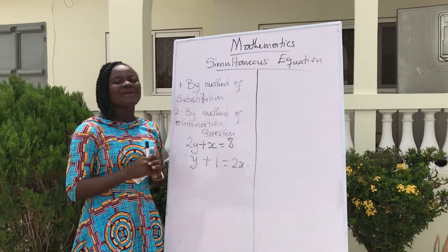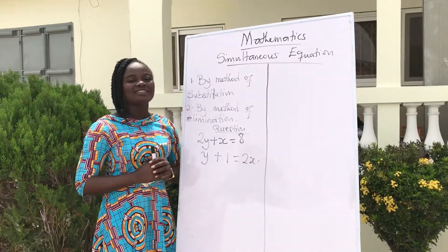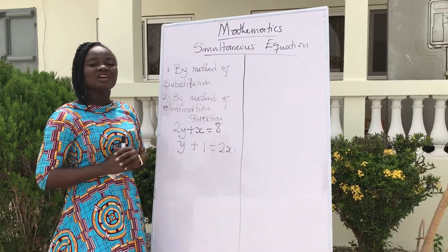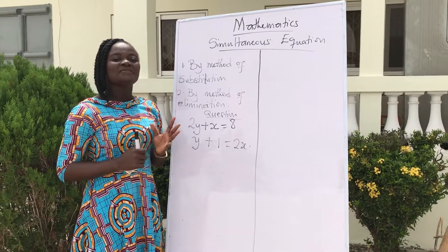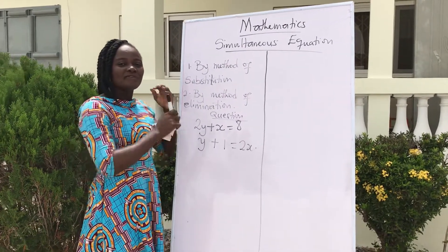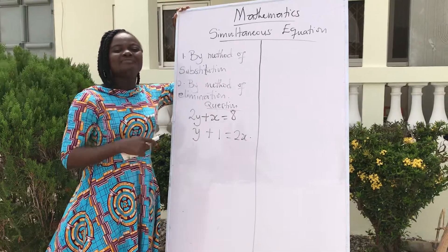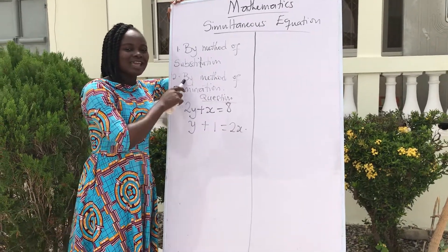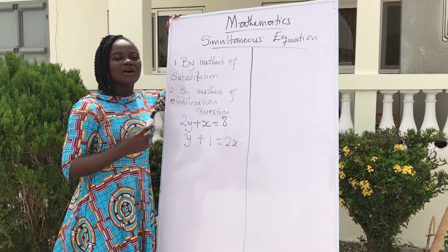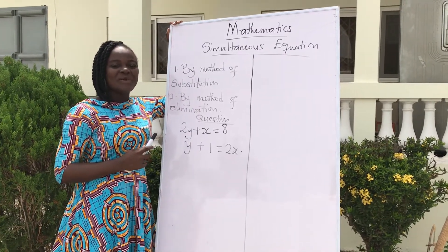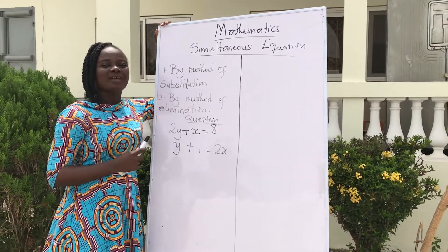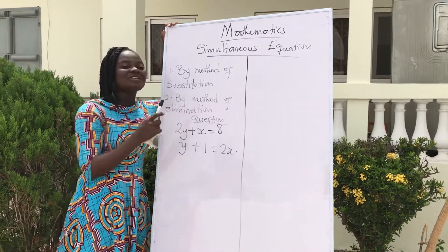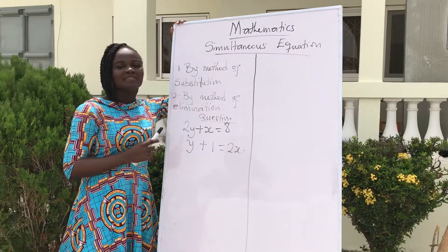Today, we are going to start with our simultaneous equations. For simultaneous equations, we have two approaches. The first is by the method of substitution, and the second is by the method of elimination. We can also use the graphical method in solving it. So the first we are going to use is the method of substitution.